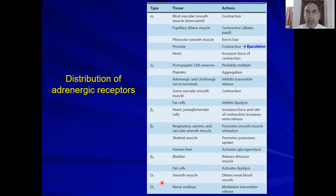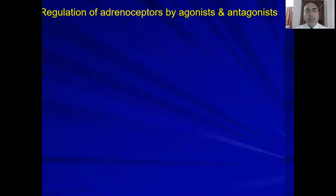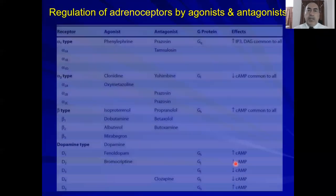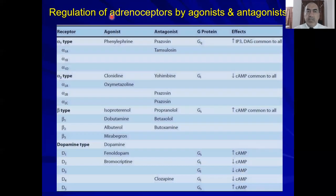The dopaminergic receptors D1 and D2: D1 is present on smooth muscle, mainly in the kidney, where it dilates renal blood vessels. D2 is found at nerve endings, where it mainly inhibits the release of dopamine.